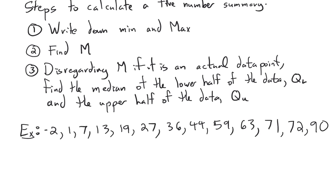That five-number summary is really important when we start graphing. Suppose we want to find the five-number summary of a data set to break it up into quarters. The first two numbers are the easiest: the minimum and maximum — the largest and smallest elements. Here's an ordered data set: the minimum is −2 and the maximum is 90. Note that you must order your data from smallest to greatest before doing any of this.